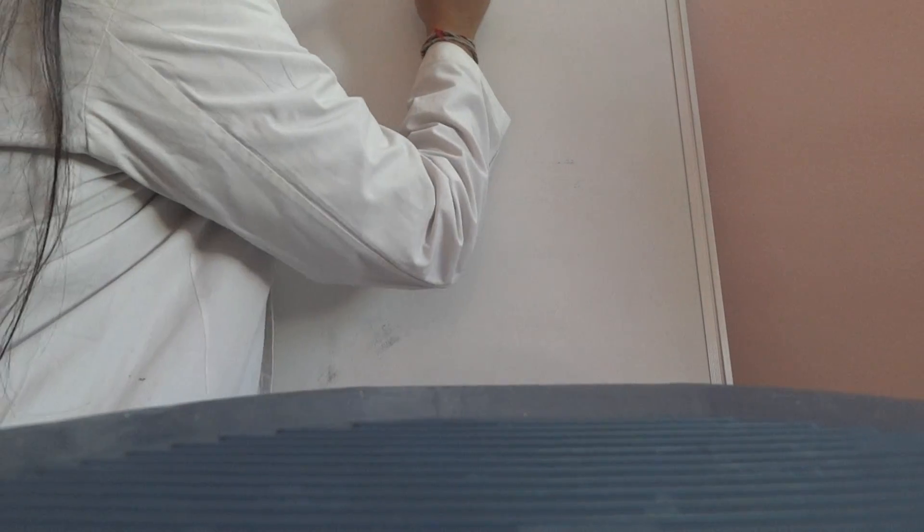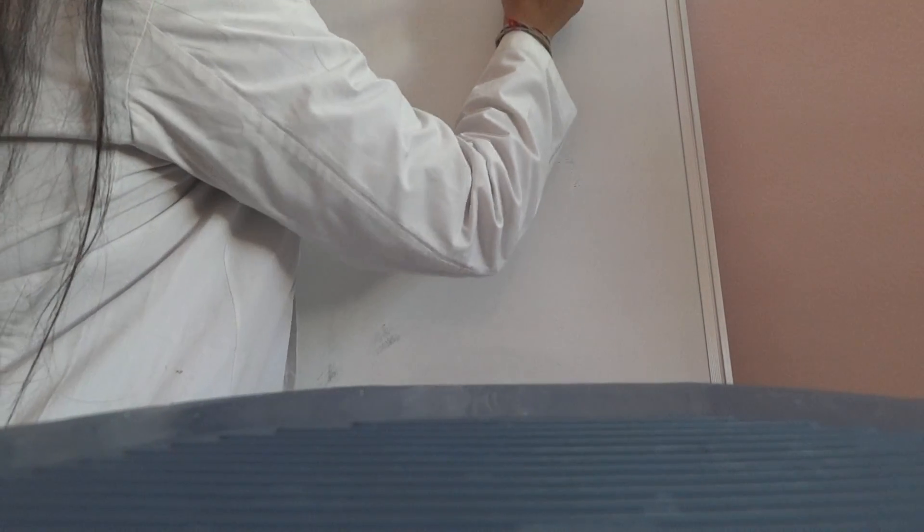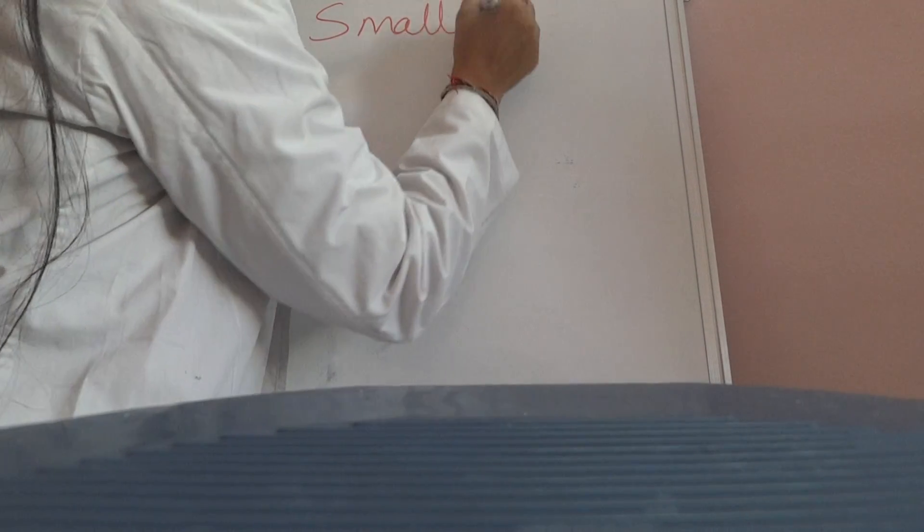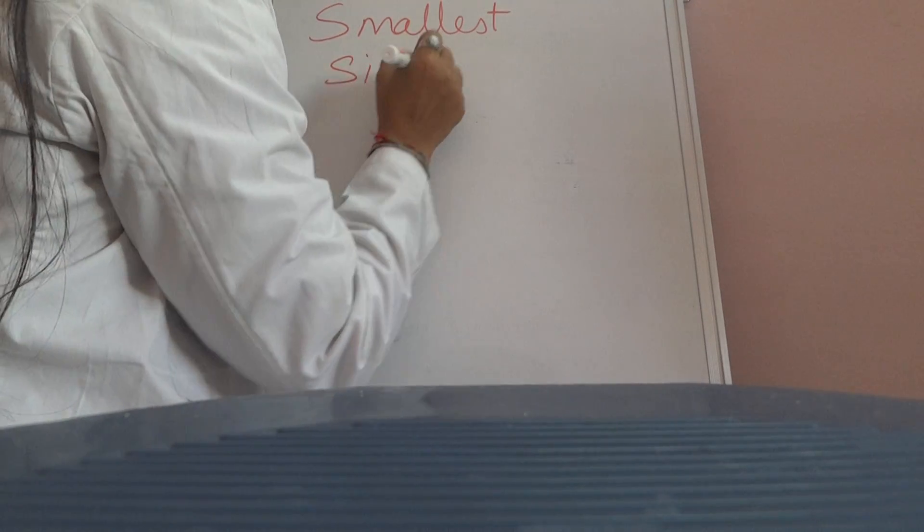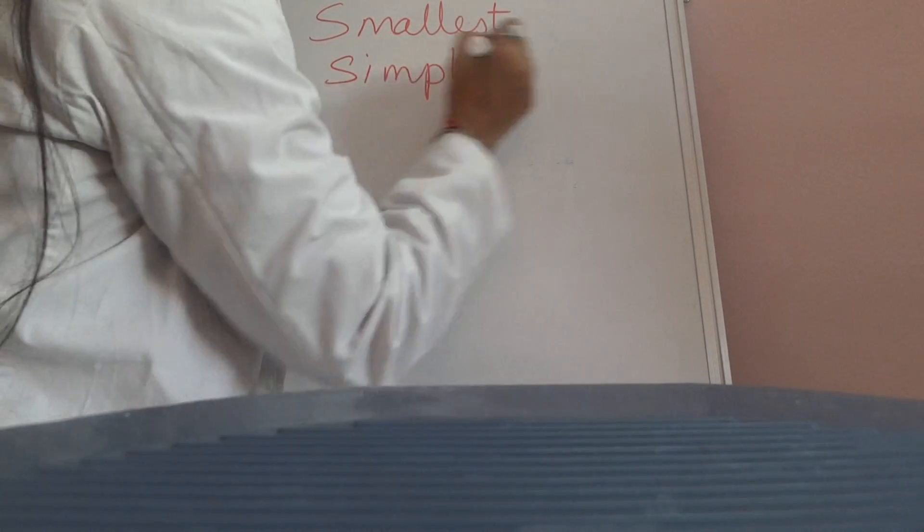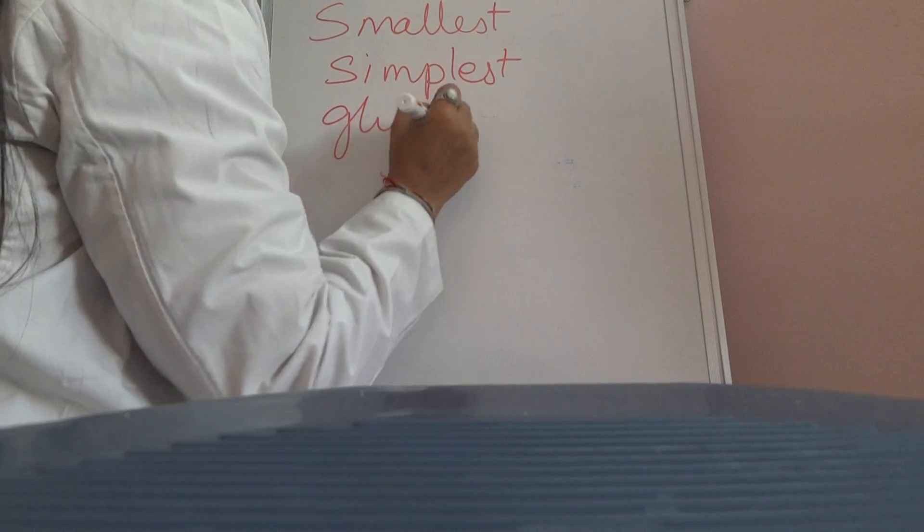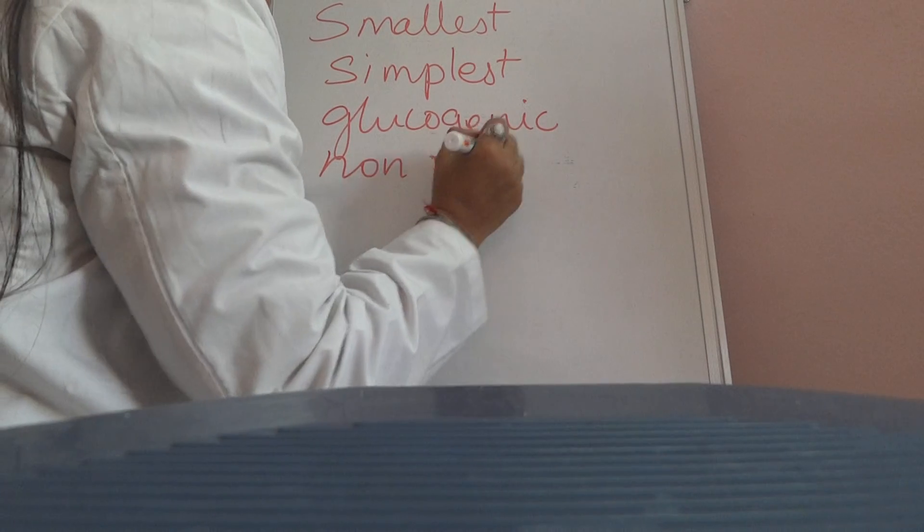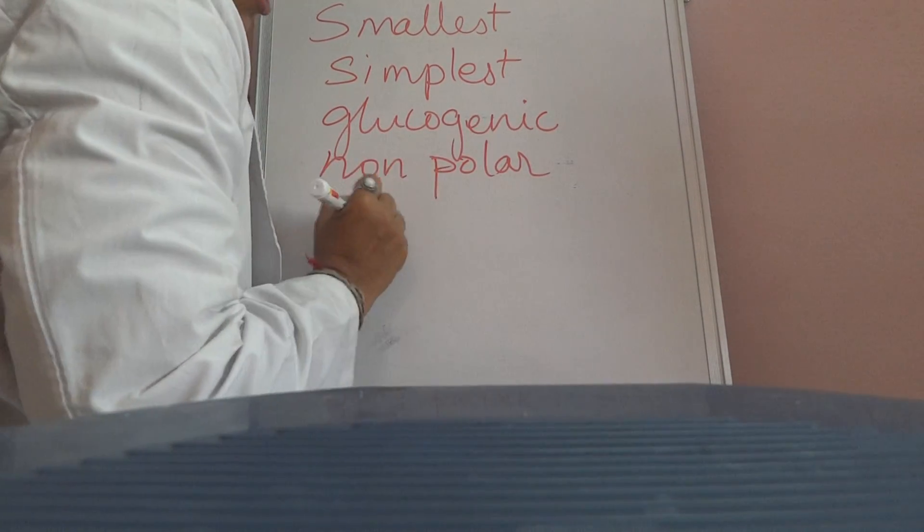Today we discuss Glycine. It is the smallest, simplest, glucogenic, non-polar, non-essential amino acid.